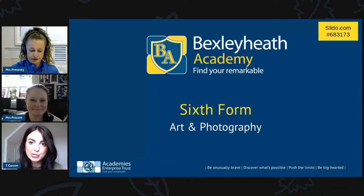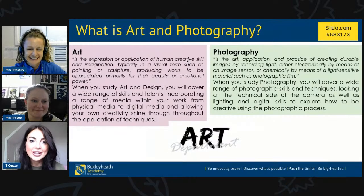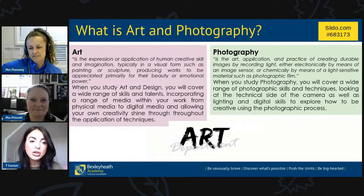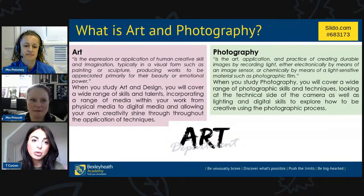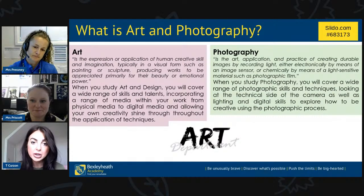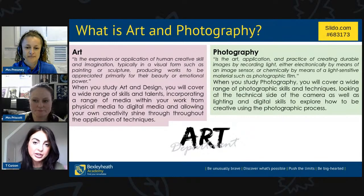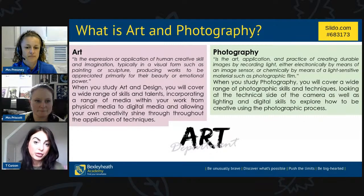So my first question is: what is art and photography in a nutshell? When you look at art, you'll study lots of different types of media — from digital media to physical media. You can look at painting, oil pastels, drawing — loads of different areas. Within art you can actually do photography, but you cannot do art within photography. You have to be using a camera if you're looking at photography.